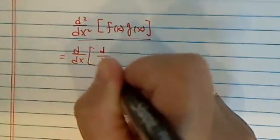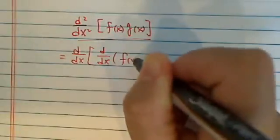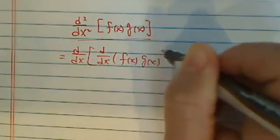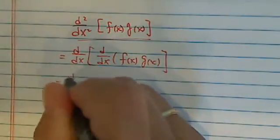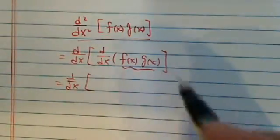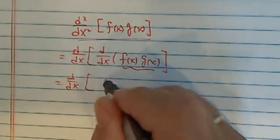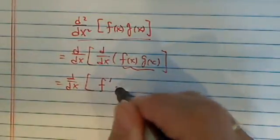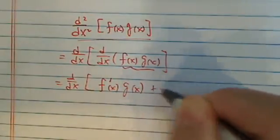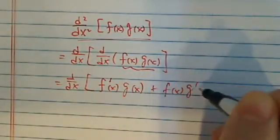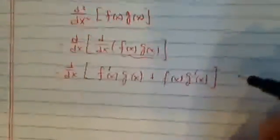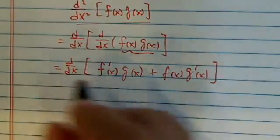So I've separated this into the first derivative. Let's find the first derivative first. We're going to use the product rule, which is: first, take the derivative of the first function and leave the second one alone, plus leave the first one alone and take the derivative of the second one.